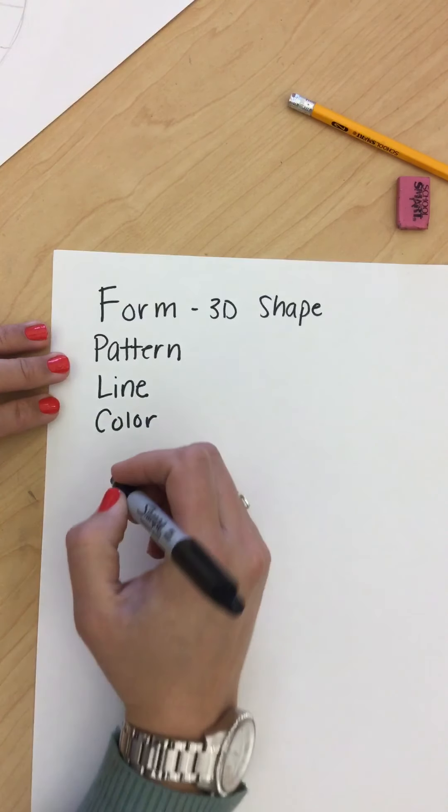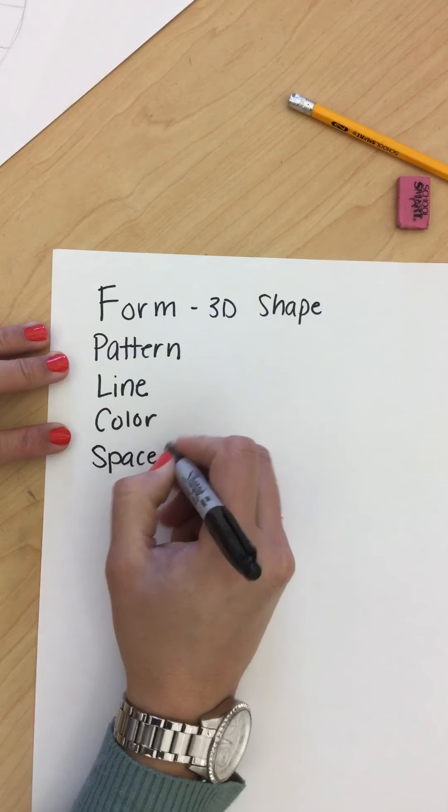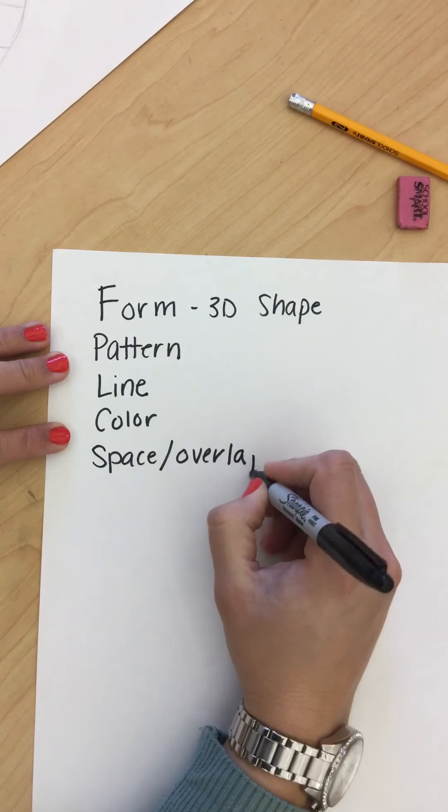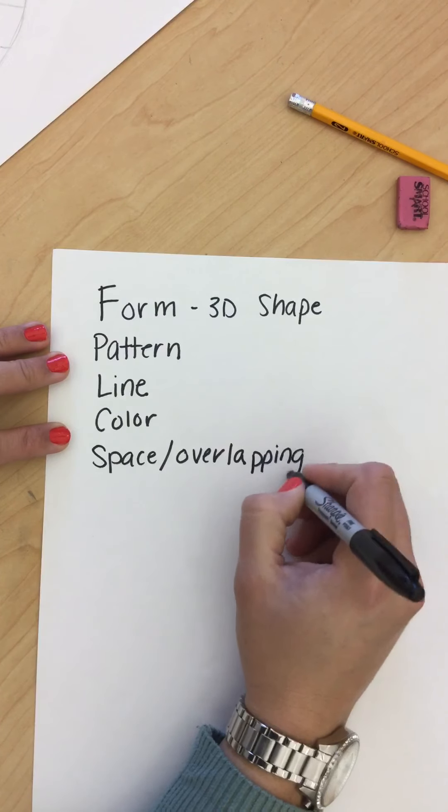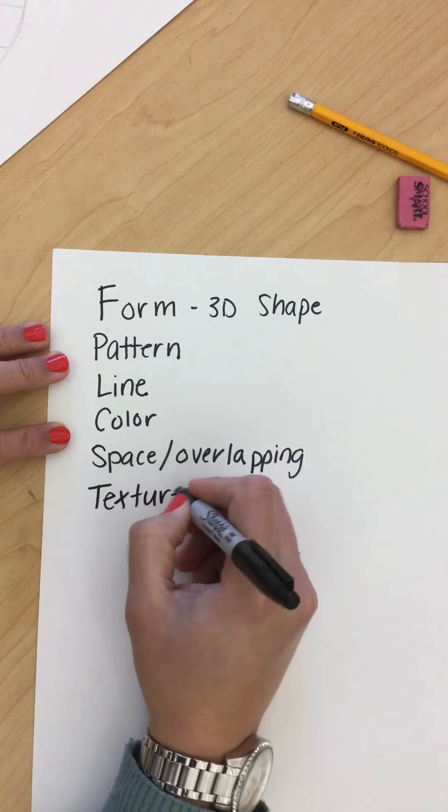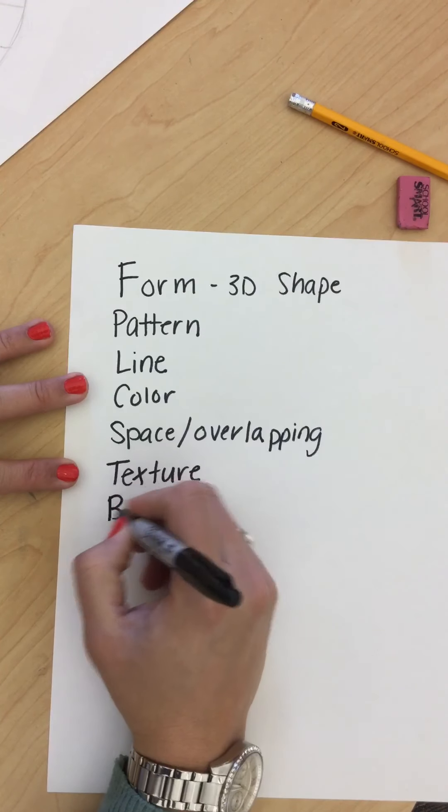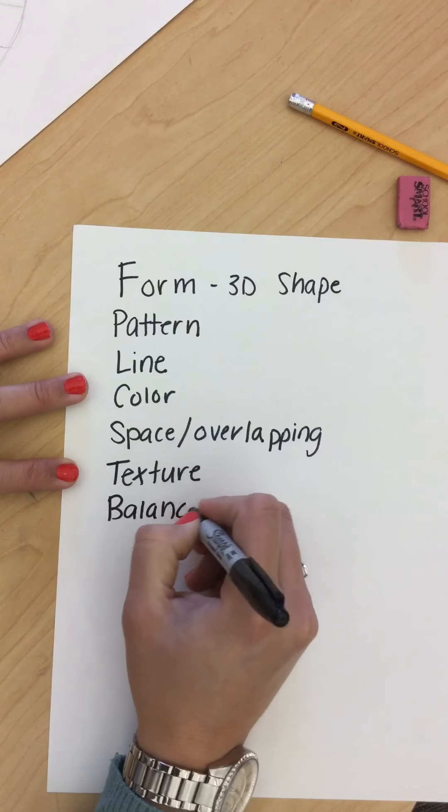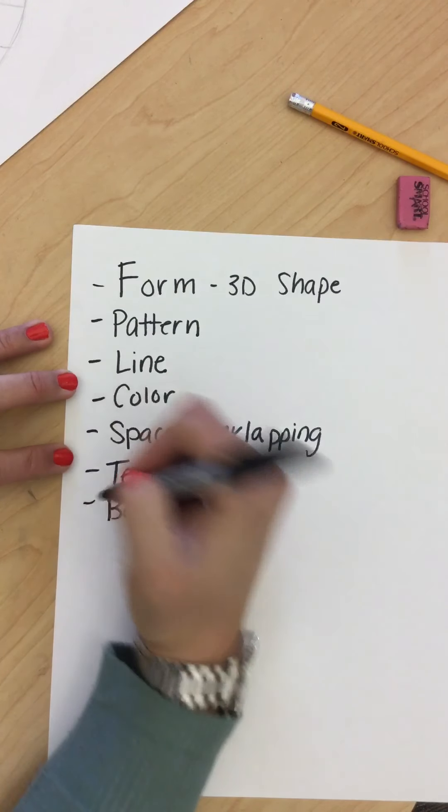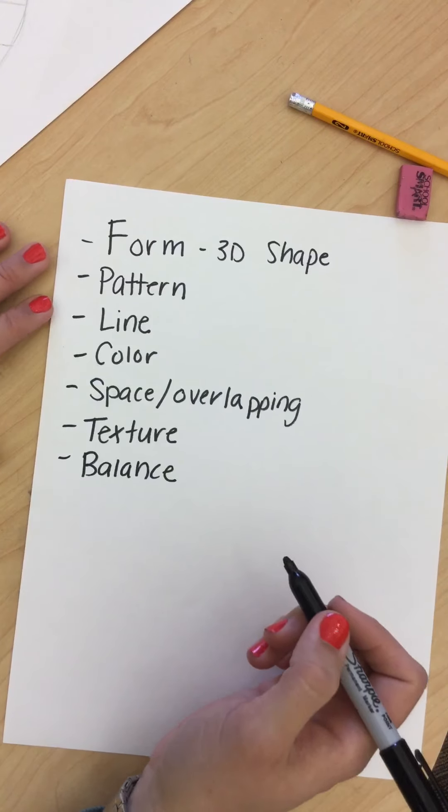Pattern, color, space and overlapping, texture, and balance. These seven points are what we are going to be focusing on.